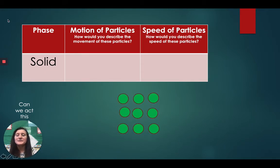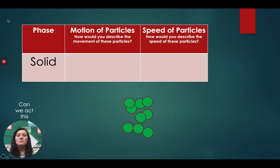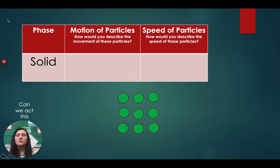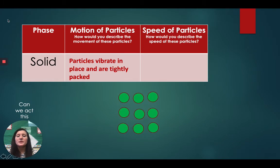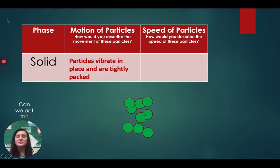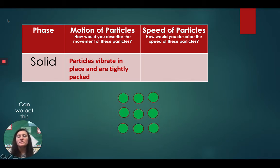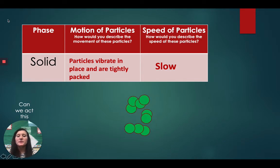First, let's look at solids. Let's look at the motion of particles — we see the green particles at the bottom. How would you describe the movement of these particles? Are they moving fast, slow, or in between? These particles vibrate in place and are tightly packed. I would say they are slow — in a solid, the particles vibrate in place, are tightly packed, and move at a slow pace.